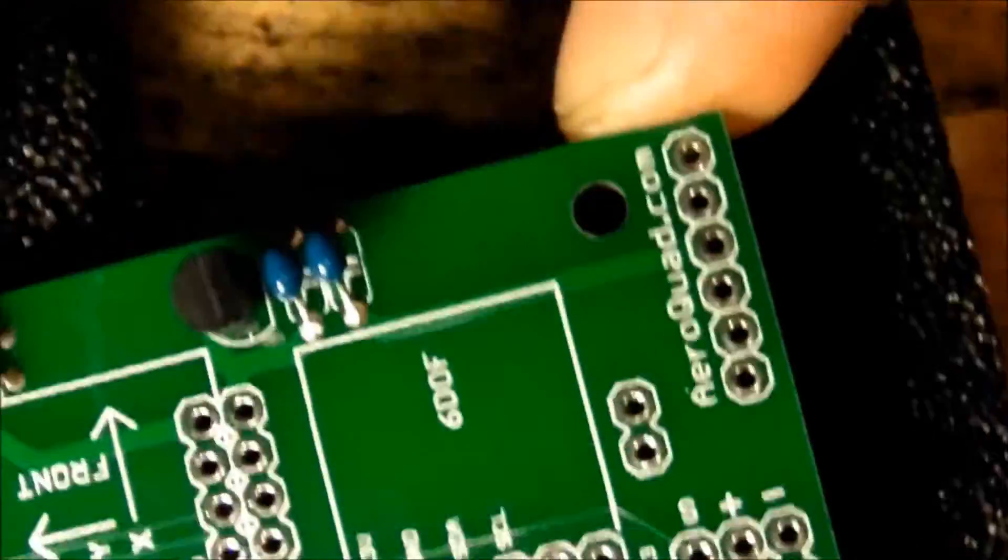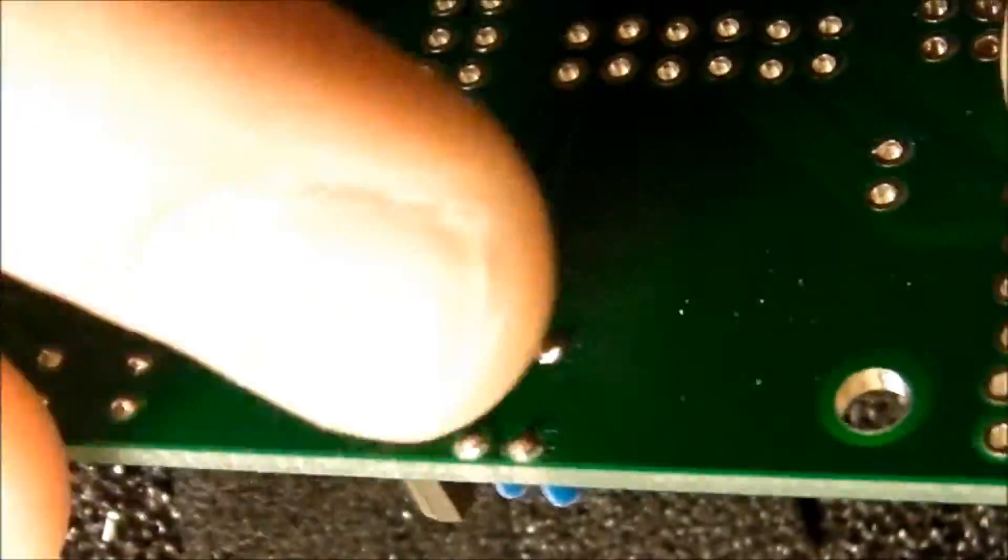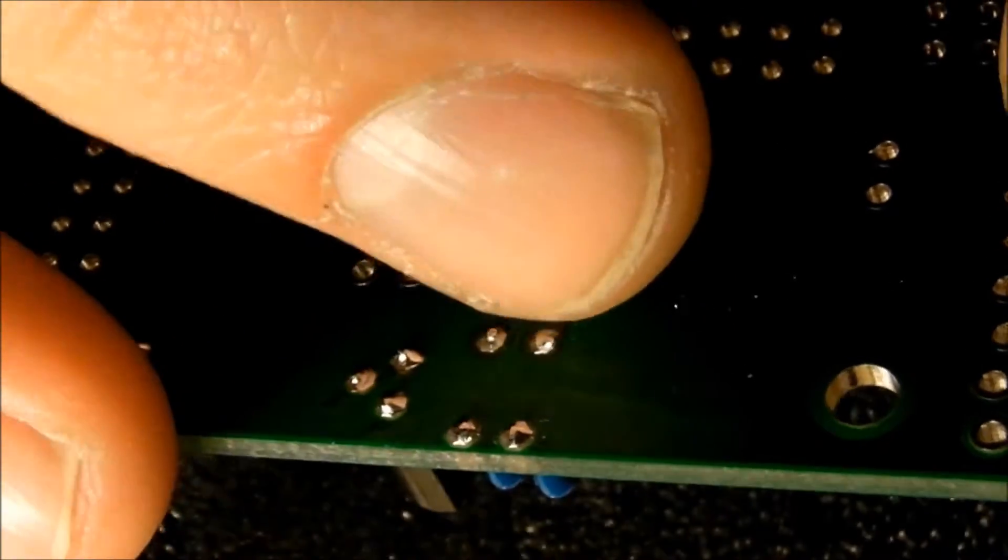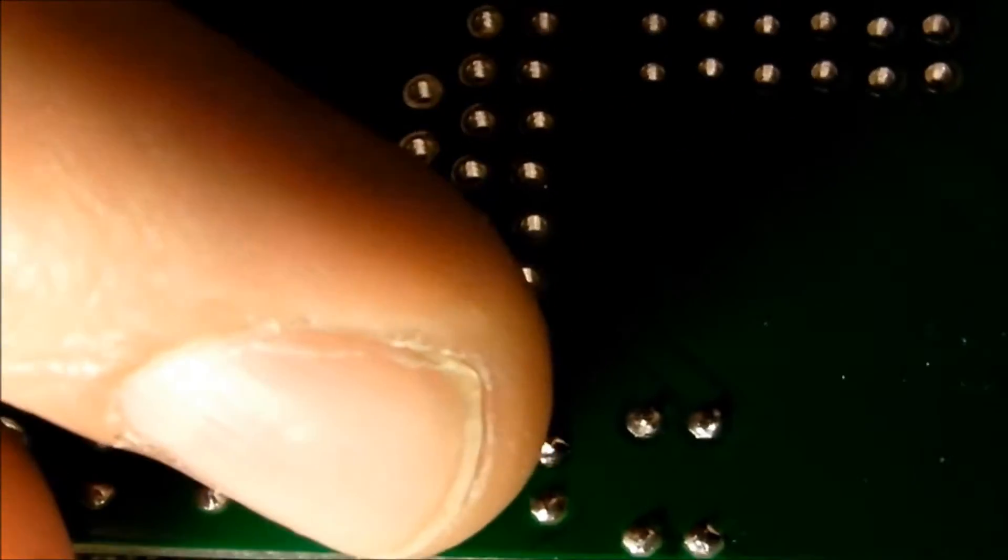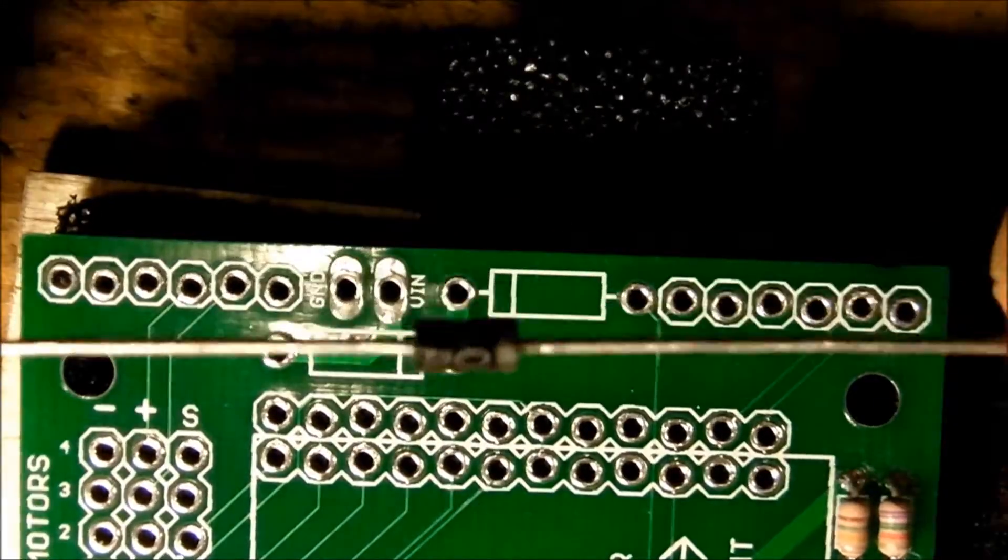Now we got the power section done. We got it soldered. We got the capacitors on the output of the 3.3 volt regulator done. We got the two resistors done. Next up is the diode.